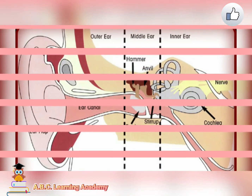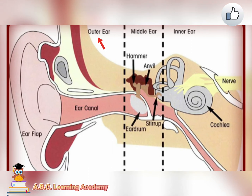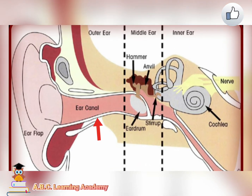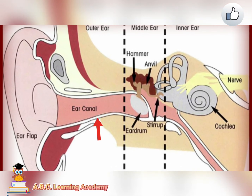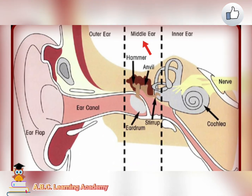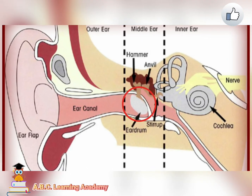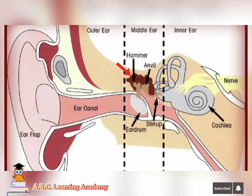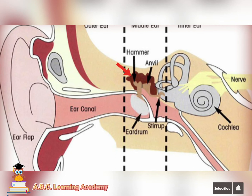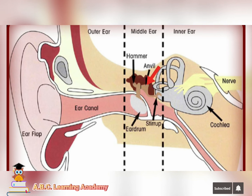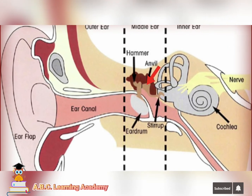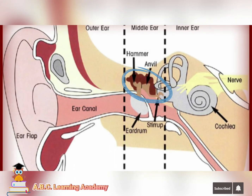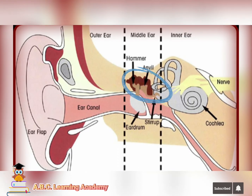The cochlea has fluid in it. In this clip, you can see the parts of the ear. The first one is the outer ear — you can see your ear and then the ear canal. The sound waves will pass through this ear canal. Then you have the middle ear. In the middle ear, you can find the eardrum. This eardrum will vibrate once the sound waves hit it. Then there is the hammer. Beside the hammer, you're going to find the anvil. And on the down part, you're going to find the stirrup. These are the three tiniest bones in the ear — hammer, anvil, and stirrup — and they are in the middle ear.